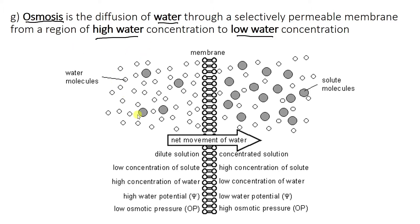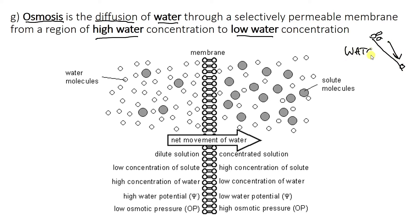Osmosis is only the movement of water — nothing else. It's basically the same as diffusion but with water, literally going from high water concentration to low water concentration. So it's still going down this gradient, but only for water. Nothing else — and that is the key here.